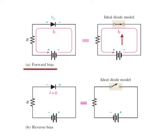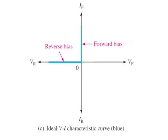Always check the data sheet for the particular diode to verify the pin configurations. The ideal model of a diode is the least accurate approximation and can be represented by a simple switch. When the diode is forward biased it ideally acts like a closed switch, and when the diode is reverse biased it ideally acts like an open switch. Although the barrier potential, the forward dynamic resistance, and the reverse current are all neglected, this model is adequate for most troubleshooting. The ideal VI characteristic curve graphically depicts ideal diode operation.